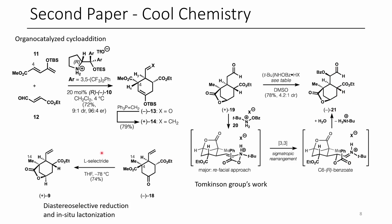Another cool reaction was the diastereoselective reduction of a ketone with L-selectride. Once the alcohol is formed on the top face of the cyclohexane ring, the methyl ester is the only ester group on the same side, so it can't form a lactone on the ethyl derivative because it's on the wrong side of the ring. In situ, they lactonize just the methyl ester group, which is kind of interesting.